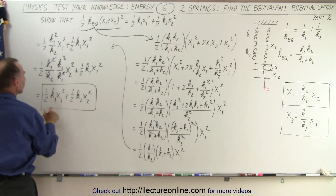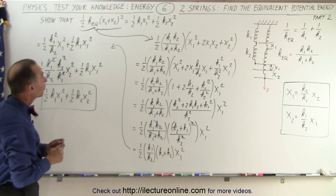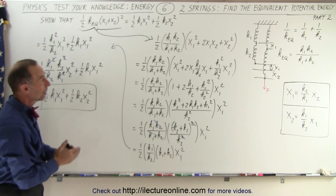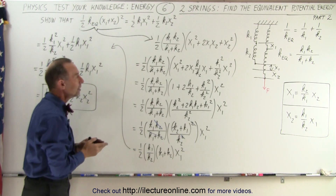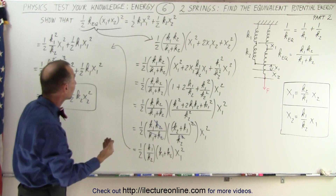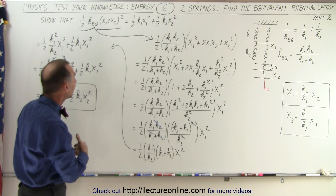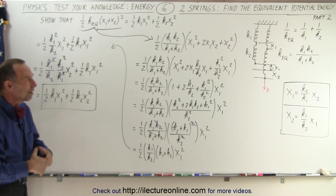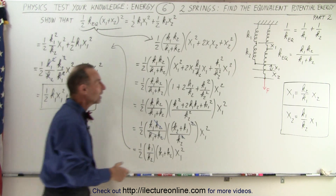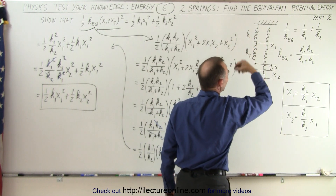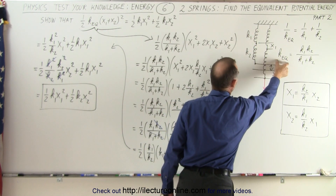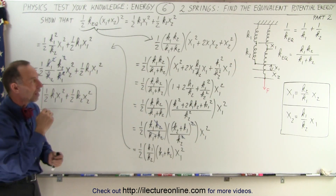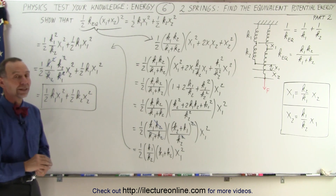This equals the right side of the equation. We've taken the left side and made it look like the right side, which means the energy stored in the equivalent spring using the equivalent spring constant equals the sum of the energy stored in each spring separately. This gives us a perfectly valid way of replacing two springs with one equivalent spring having an equivalent spring constant and equivalent stored energy when a force is applied.